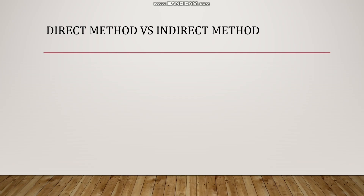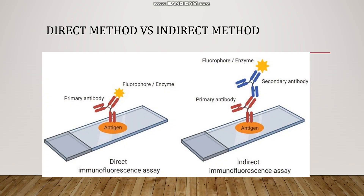In both direct and indirect methods, a primary antibody is used. In the direct method, the primary antibody itself is tagged with a fluorophore or enzyme. In the indirect immunofluorescence assay, a secondary antibody is also used — the primary antibody is bound by a secondary antibody which is already tagged with a fluorophore or enzyme.